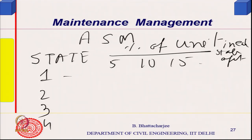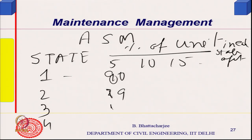The anticipated state matrix: states 1, 2, 3, 4, etc., and the percentage of area or units in each state after 5 years, 10 years, 15 years, and so on. After 5 years, maybe 80 percent will be in state 1, about 19 percent in state 2, and maybe 1 percent in state 3 — just as an example. This record has to be kept.